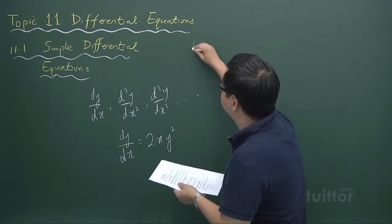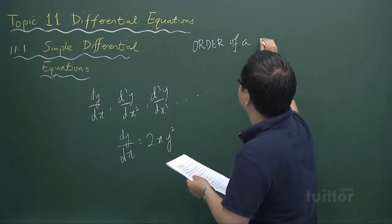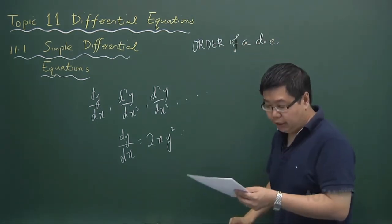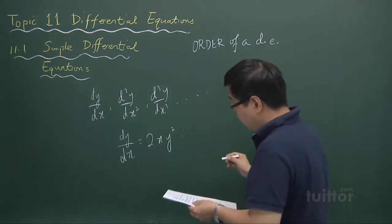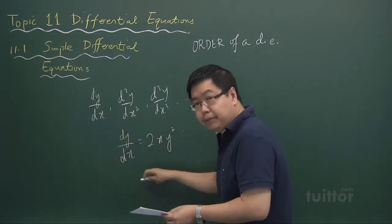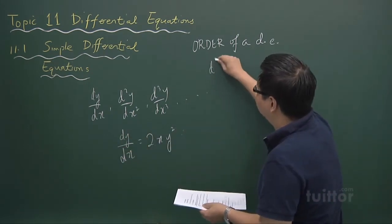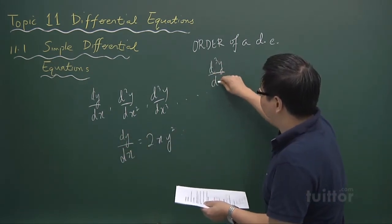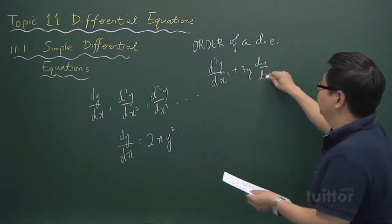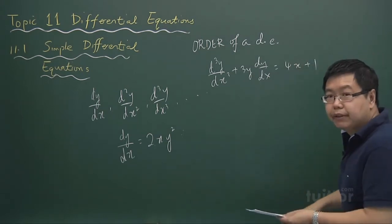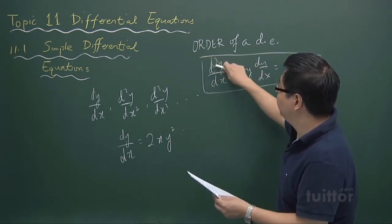The order of a differential equation is basically the order of the highest derivative which it contains. In the first example, the order of the differential equation would be 1. Another example could be d³y/dx³ plus 3y·dy/dx equals 4x plus 1. In this example, the order of this differential equation will be 3.